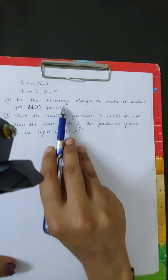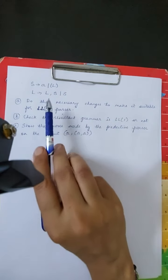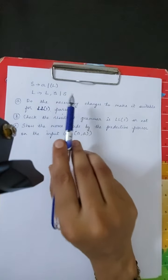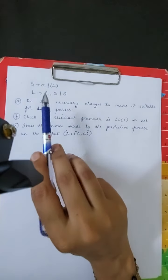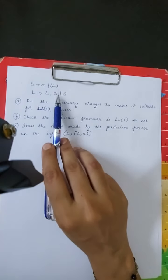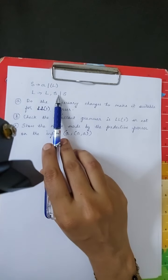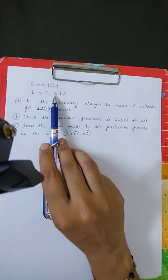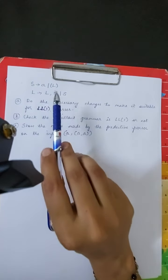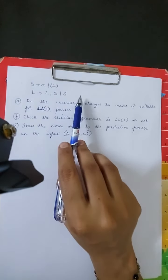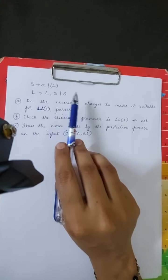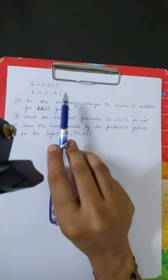For the grammar to be suitable for LL(1) parsing it should not be ambiguous, it should not be left recursive, and it should be left factored. This grammar is unambiguous — we can prove that by drawing the parse trees. If it produces only one parse tree then it is unambiguous.